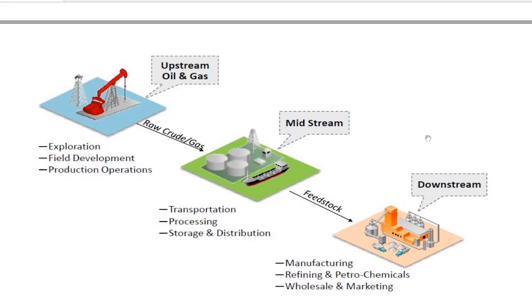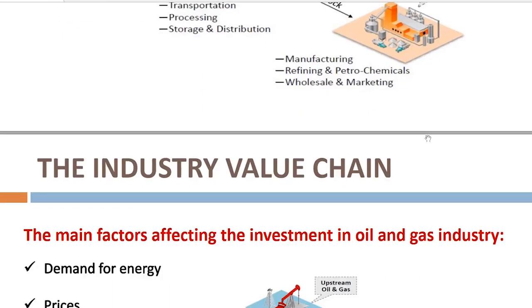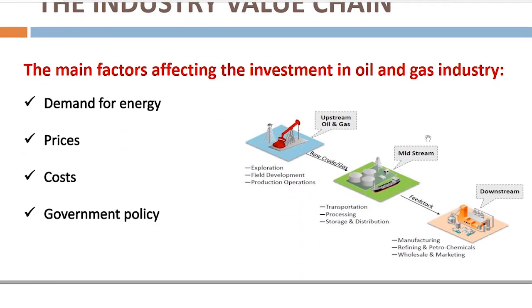In general, we have three important factors affecting our industry. First is the demand for energy. Second is profit, which depends on prices and costs. Third is government policy — the petroleum industry is essentially a political game between different governments. We must understand the government policy and investment environment before making any decisions to invest in any sector of the value chain.